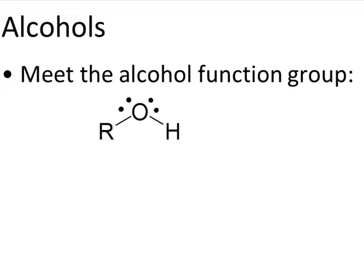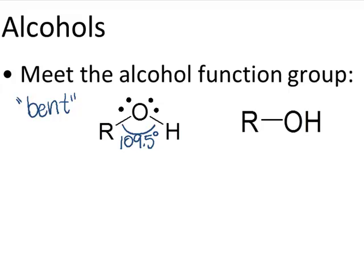Notice also that the oxygen has two electron pairs. That means that the geometry around this oxygen is what we refer to as bent geometry. Because it has a total of four charge clouds, or four areas of electron density, it actually shares a very similar bond angle to what we've seen with tetrahedral carbon — about 109.5 degrees. Despite this, many times we condense the alcohol functional group and simply write OH, connecting that to whatever carbon group is also present.